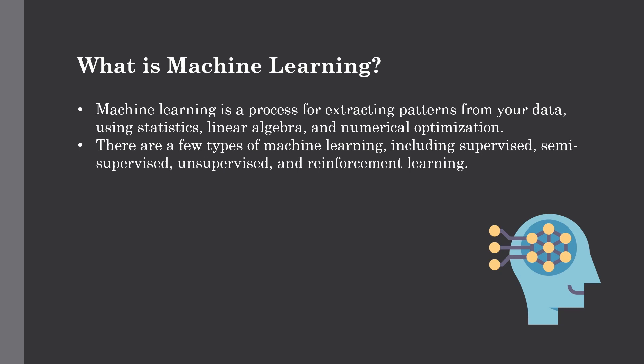The term machine learning is getting a lot of hype these days, but broadly speaking, machine learning is nothing but a process for extracting patterns from your data using statistics, linear algebra, and numerical optimizations. It can be applied to problems such as predicting power consumption, determining whether there is a dog in a video, or clustering items with similar characteristics. There are a few types of machine learning: supervised, semi-supervised, unsupervised, and reinforcement learning.